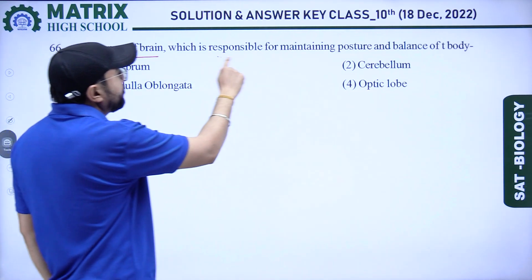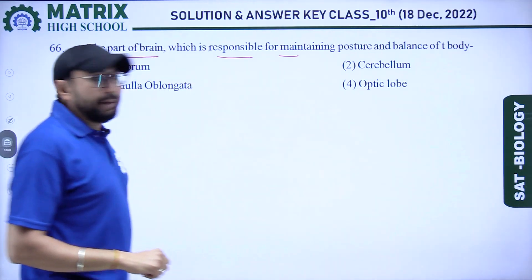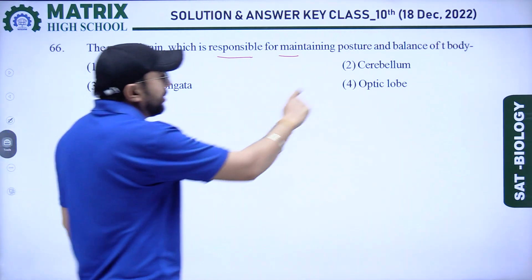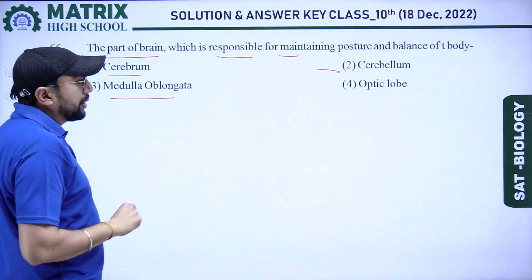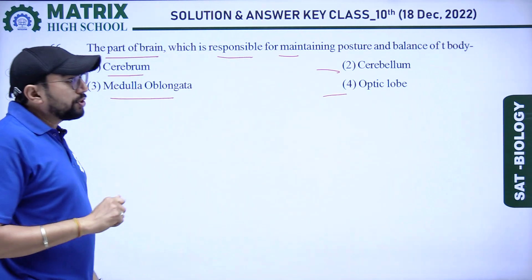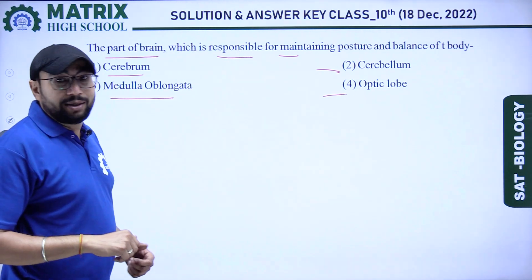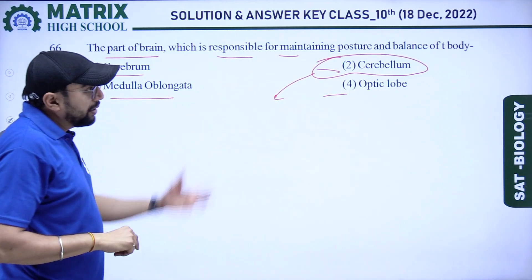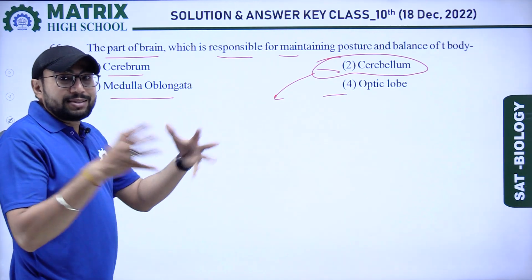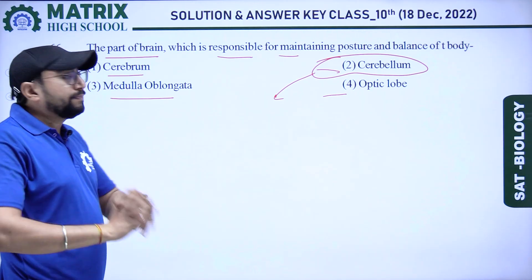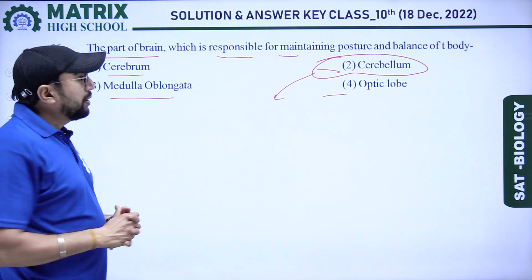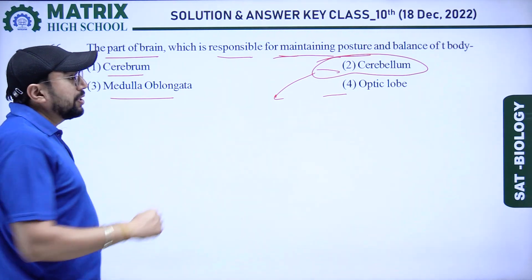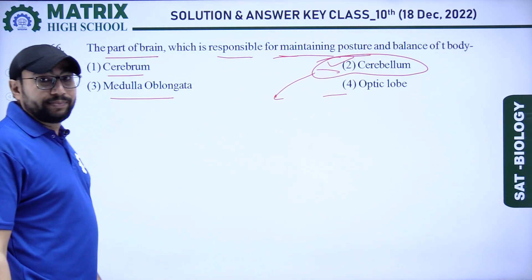Next question: the part of the brain responsible for maintaining posture and balance of the body. Options: cerebrum, cerebellum, medulla oblongata, and optic lobe. Cerebellum is the right answer because it receives many signals from other parts of the brain and gives the result to the body to maintain posture and balance.